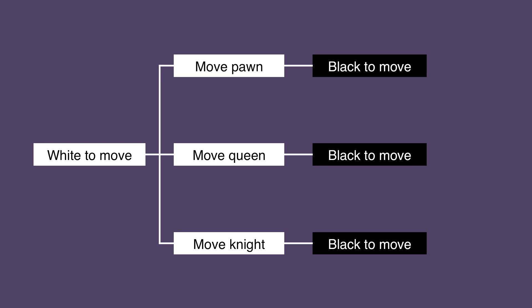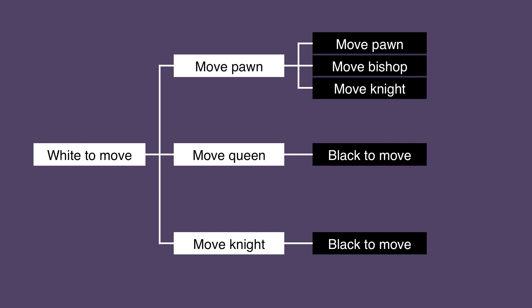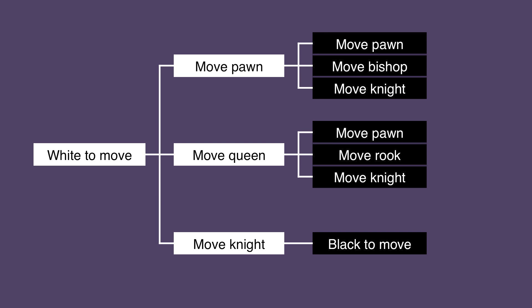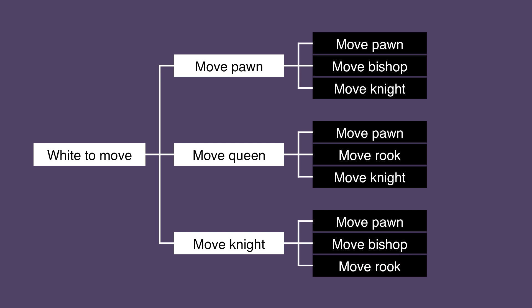After he moves, Black will move. Depending on what White does, Black will have different options. If White moves his Pawn, Black can move a Pawn, a Bishop, or a Knight. If White moves his Queen, Black can move a Pawn, a Rook, or a Knight. And if White moves his Knight, Black can move a Pawn, a Bishop, or a Rook.